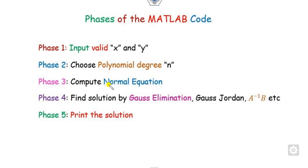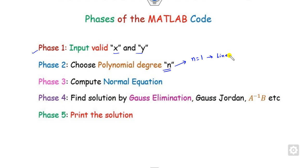Our task is to write a generalized code for such problems. I can divide this lecture into five phases. Phase one is how you can input valid X and Y. Phase two is how you can choose the required degree of the polynomial — if N is 1 it is linear, if N is 2 it is quadratic, and so on. After that, we write the normal equations and then use one of the solution methods. Finally, we can print the solution.